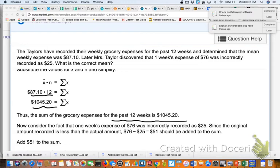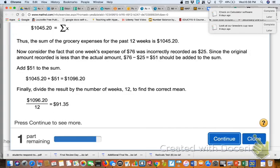Now, however, as the problem tells us, they figured it out wrong because one week that should have been $76 was actually recorded as $25. So that means when they added together that total of $1,045.20, it was $51 too small. So that means you've got to add $51 into that total, which is what they did in this part of the example.